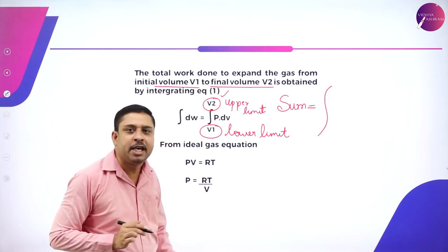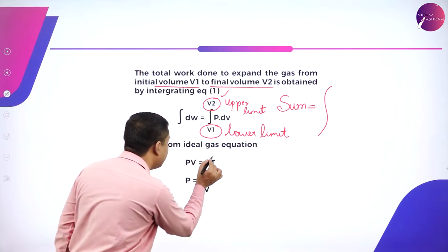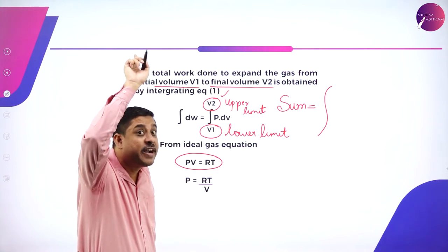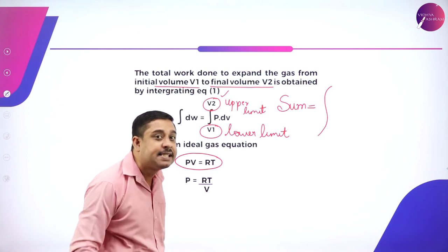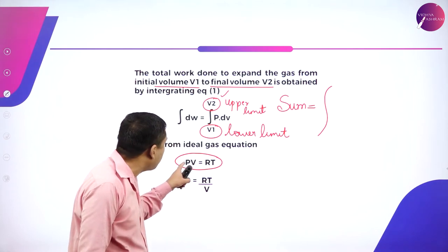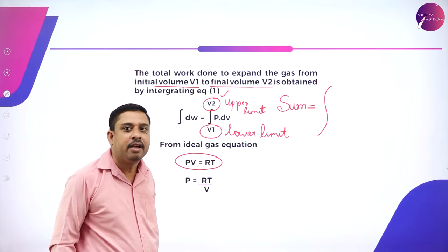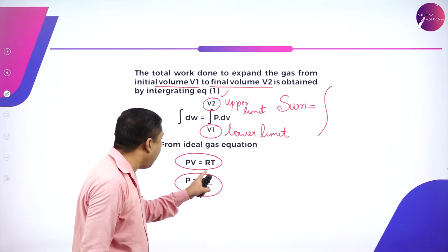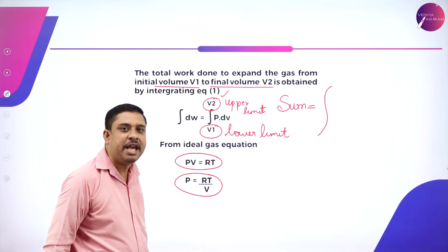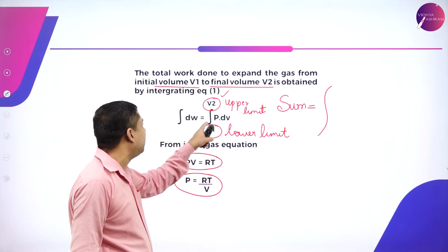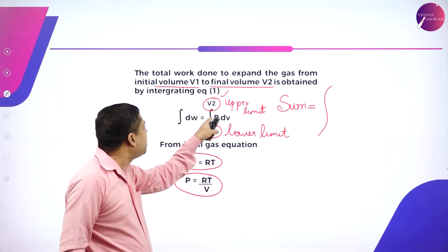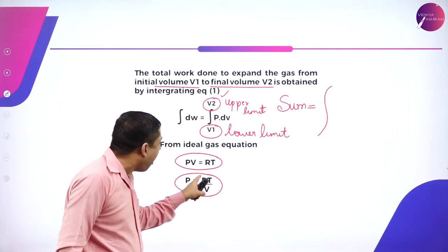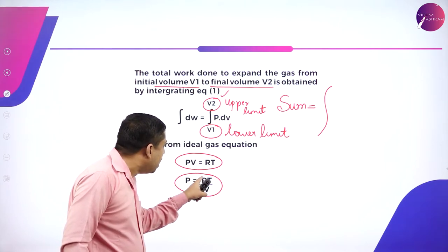Now we know the ideal gas equation which says PV equals RT. From this, P equals RT divided by V. I can substitute this value of P. So substituting for P which is RT divided by V, the integral becomes: integral of dW equals integral from V1 to V2 of (RT divided by V) times dV.